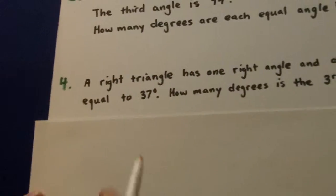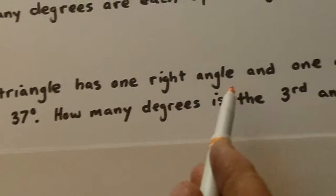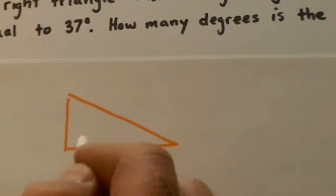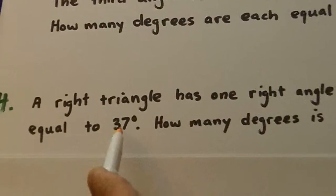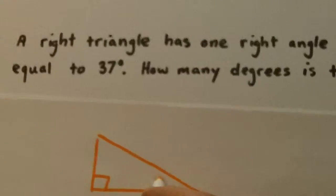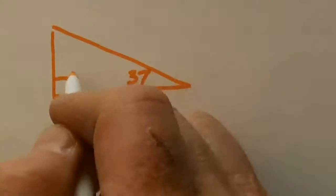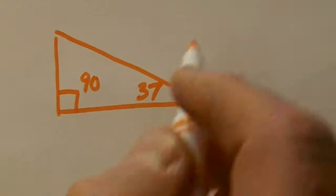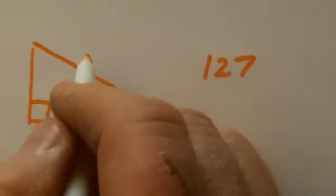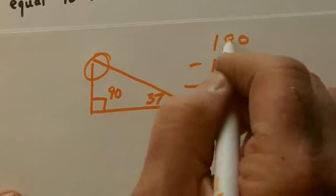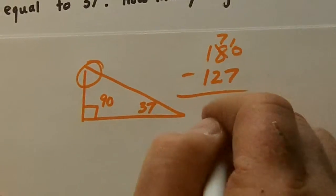All right, let's go down to four. A right triangle has one right angle and one angle equal to 37. So this looks a little smaller. How many degrees is the third angle? Well, here's 90, there's 37, add those up, 127. Now this angle is going to be 180 minus 127, and we get 53. That third angle is 53 degrees.